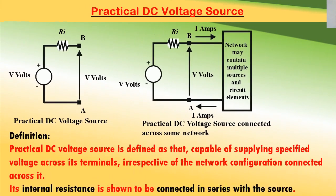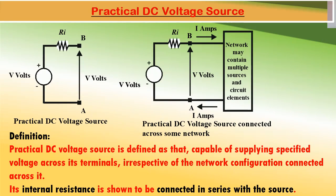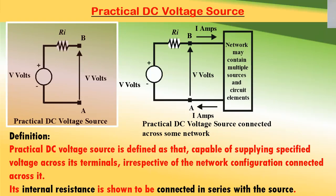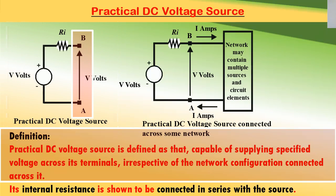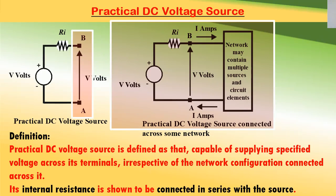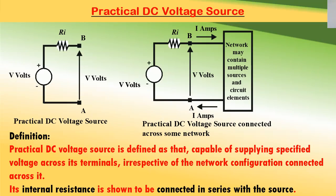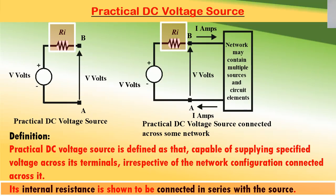What is a practical DC voltage source? A practical DC voltage source is one which is capable of delivering a specified voltage across its terminals irrespective of the network configuration connected across it. In this case, the internal resistance is shown to be connected in series with the source as shown in the figure.